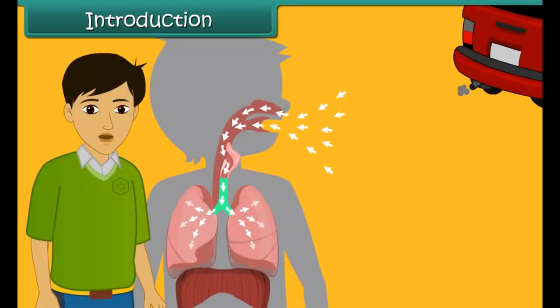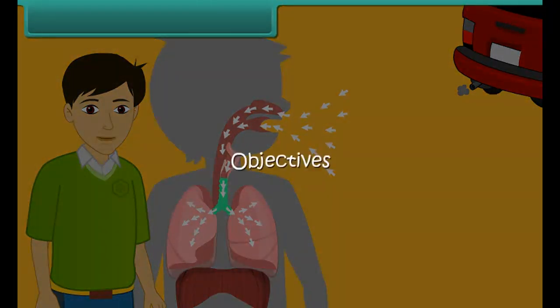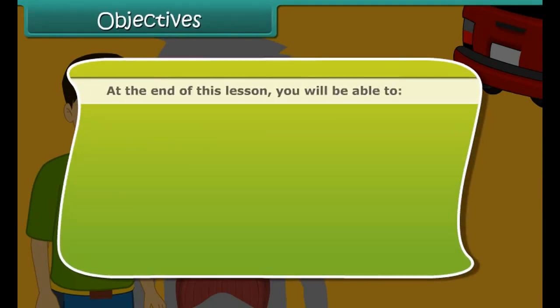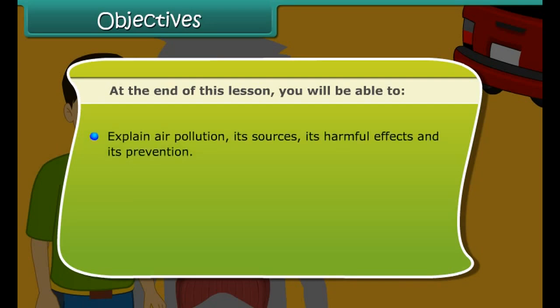In this lesson we will study about the harmful changes taking place in our surroundings and their effects on our lives. At the end of this lesson you will be able to explain air pollution, its sources, its harmful effects and its prevention.